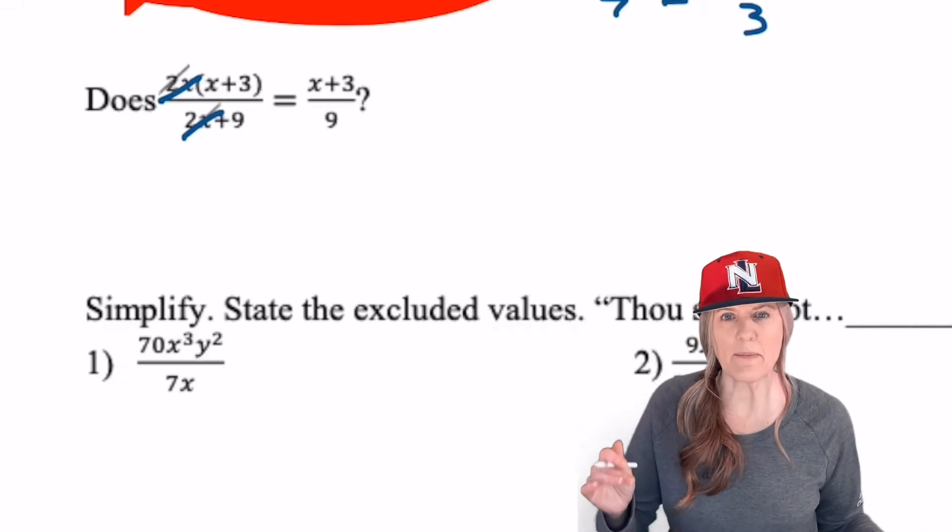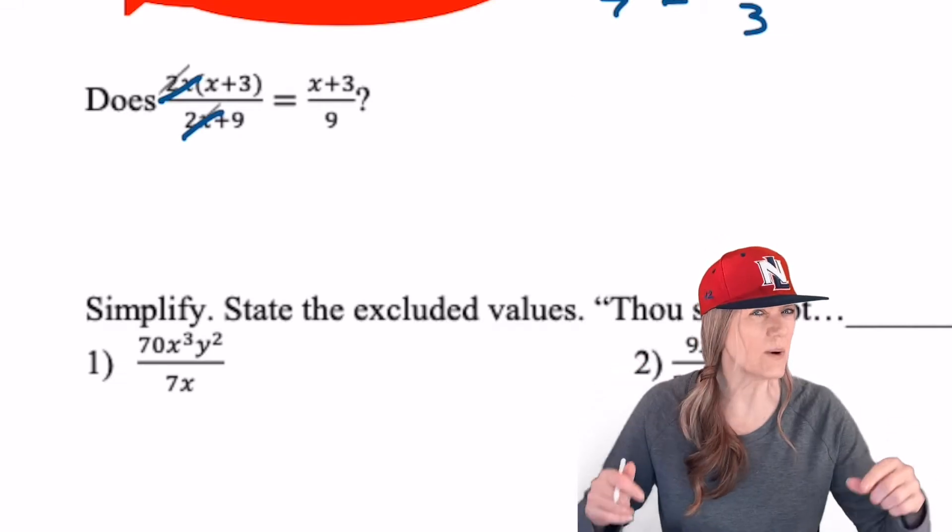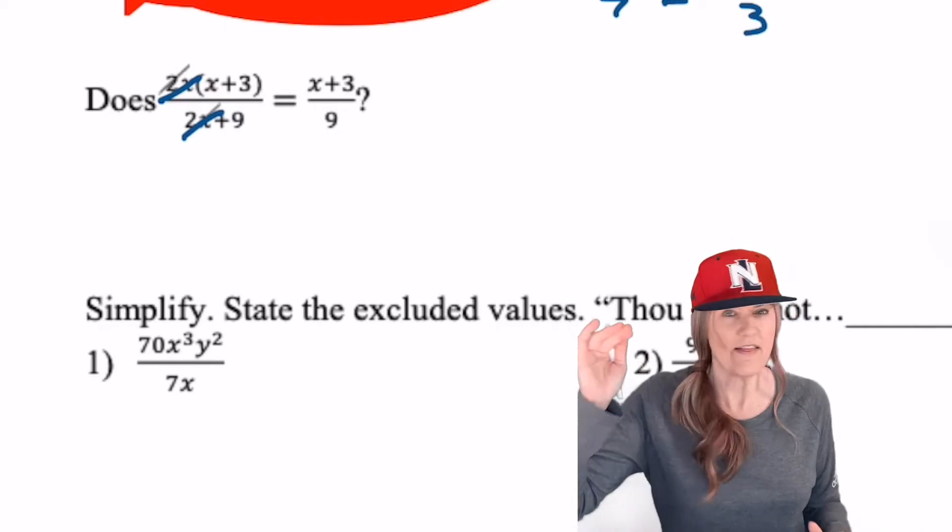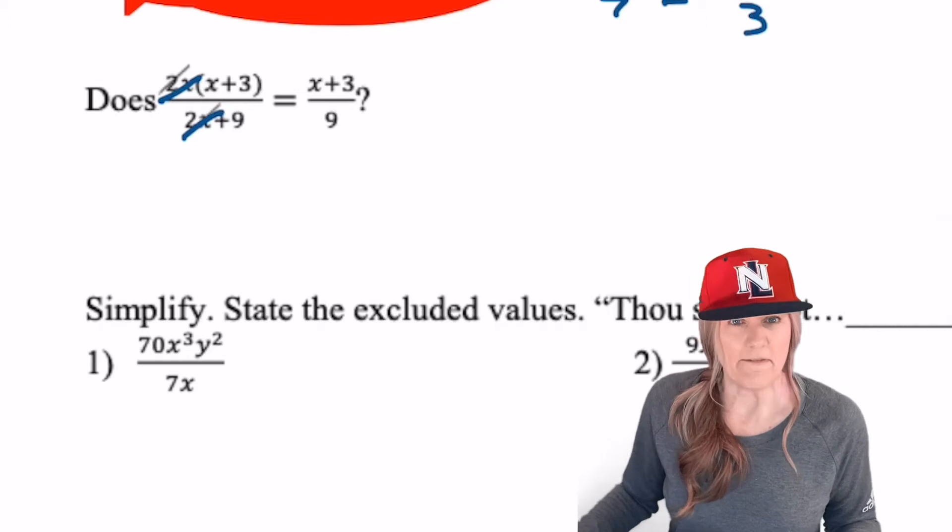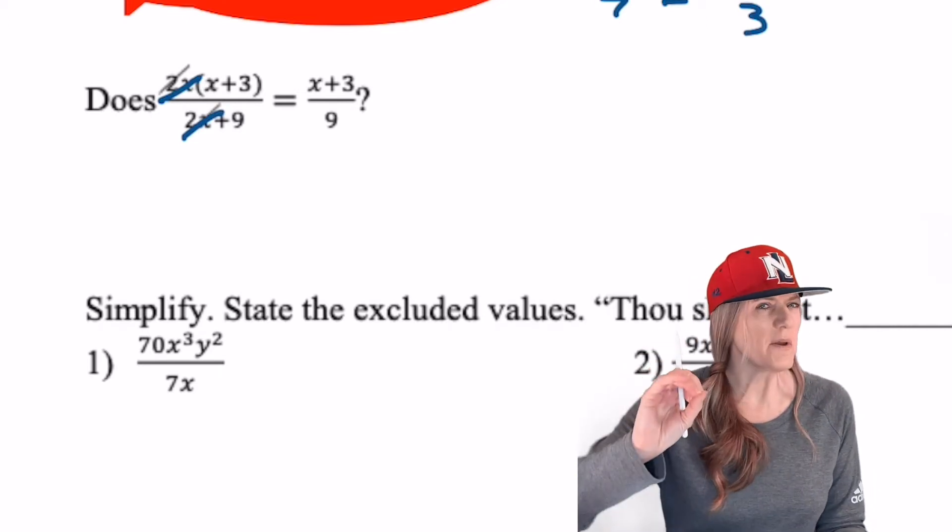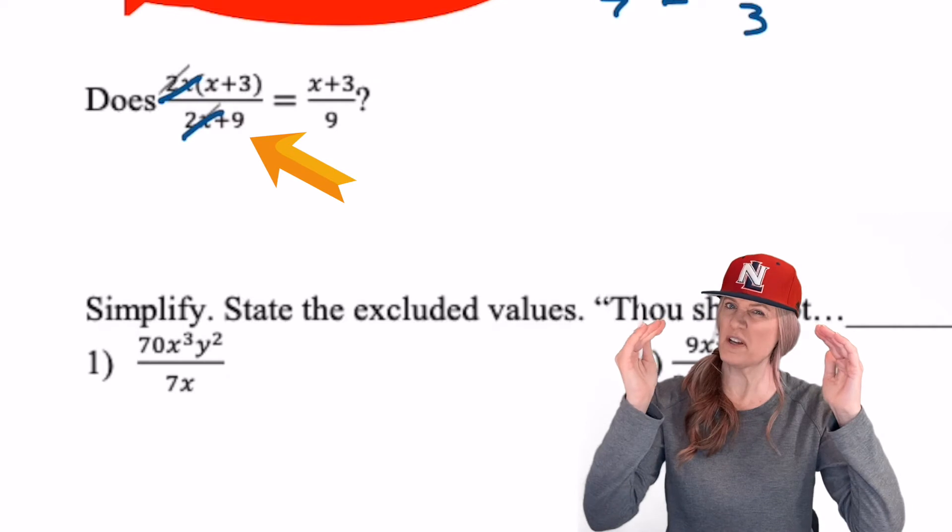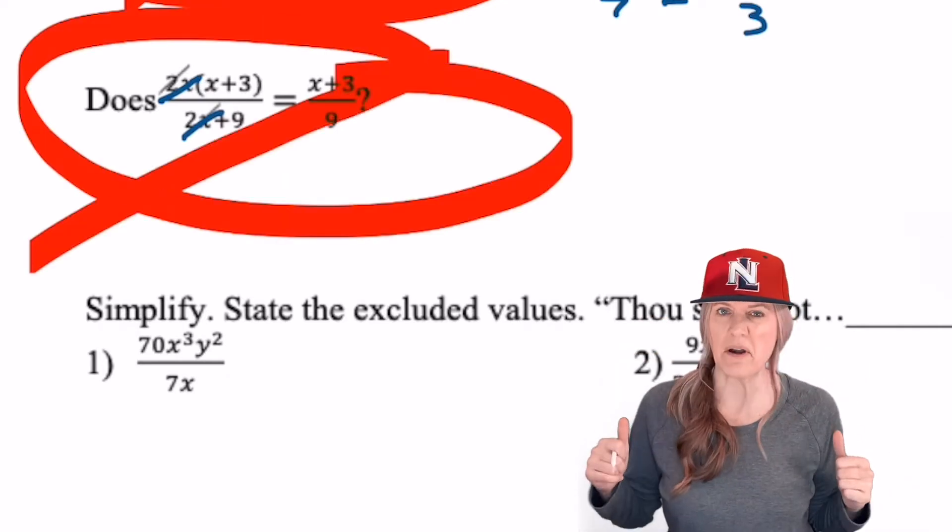This is a close call! 2x divided by 2x. In the numerator we have 2x times x plus 3. That seems okay. In the denominator 2x plus 9. That one's a foul ball. We see the numerator? That would have been okay but that denominator 2x plus 9? That should have been hugged out. You gotta take all of it or none of it.